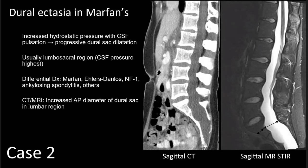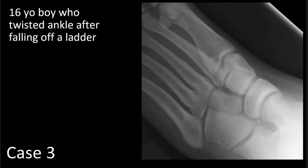In addition to Marfan syndrome, other considerations for dural ectasia include Ehlers-Danlos, neurofibromatosis type 1 — not type 2 — ankylosing spondylitis, as well as some other more rare entities. On CT or MRI, you can see that increased AP diameter of the dural sac in the lumbar region.